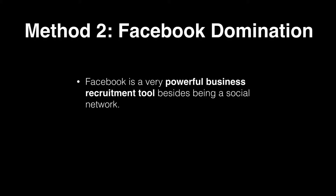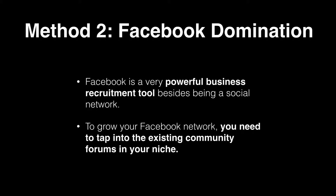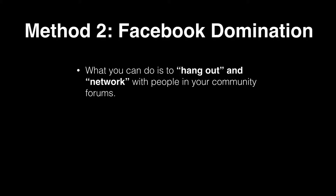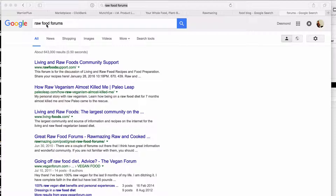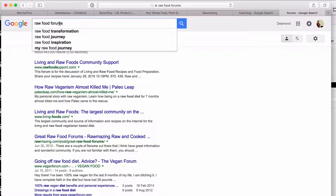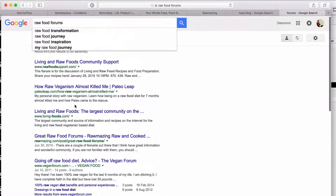Method number two: Facebook domination. This is very powerful and always overlooked. Facebook is a powerful business tool besides being a social network. To grow your Facebook network, tap into existing community forums in your niche. Search for forums and start networking with people. Simply Google your niche plus the word 'forums' and you'll find plenty — like VeganForum.com, PaleoLeap, Raw Food Support, Living Foods — lots of active communities.